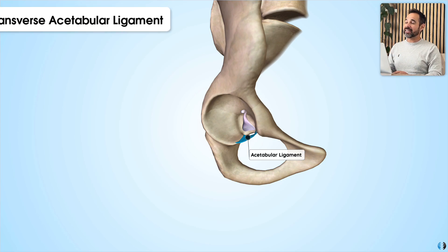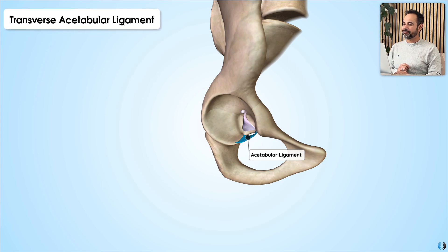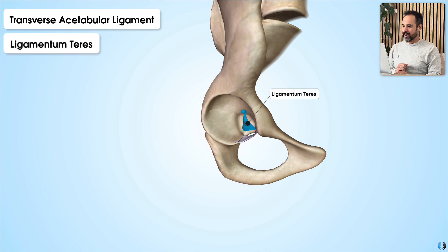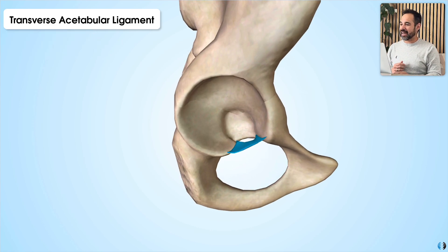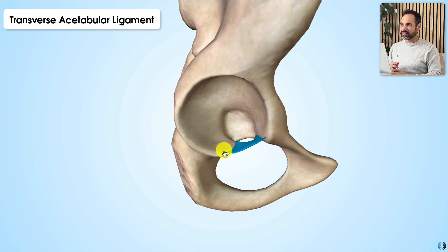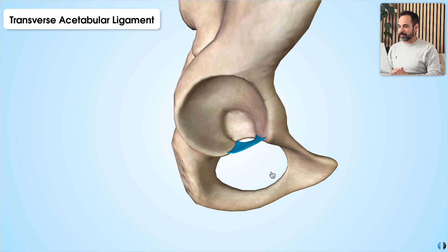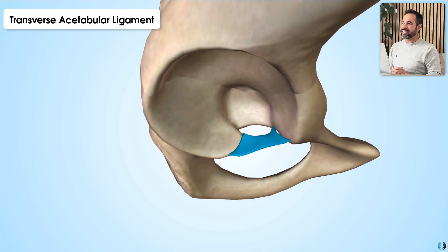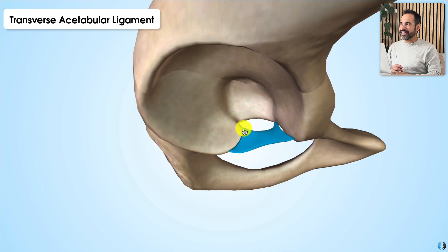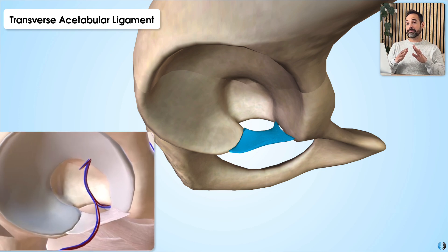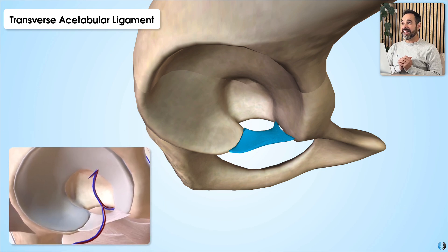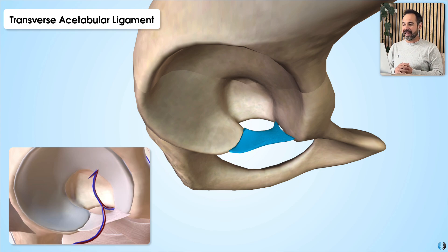The first intracapsular ligament is the transverse acetabular ligament, and the second is the ligamentum teres. The transverse acetabular ligament is flat in its shape, and it spans the inferior aspect of the acetabulum where no bone is present. It creates a small gap between itself and the acetabular notch, which allows important blood vessels to enter and supply the hip joint as well as the head of femur.